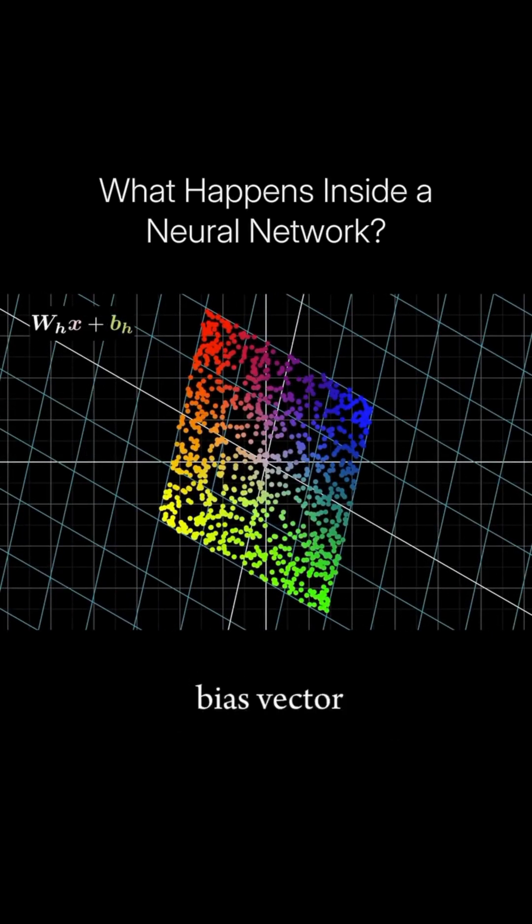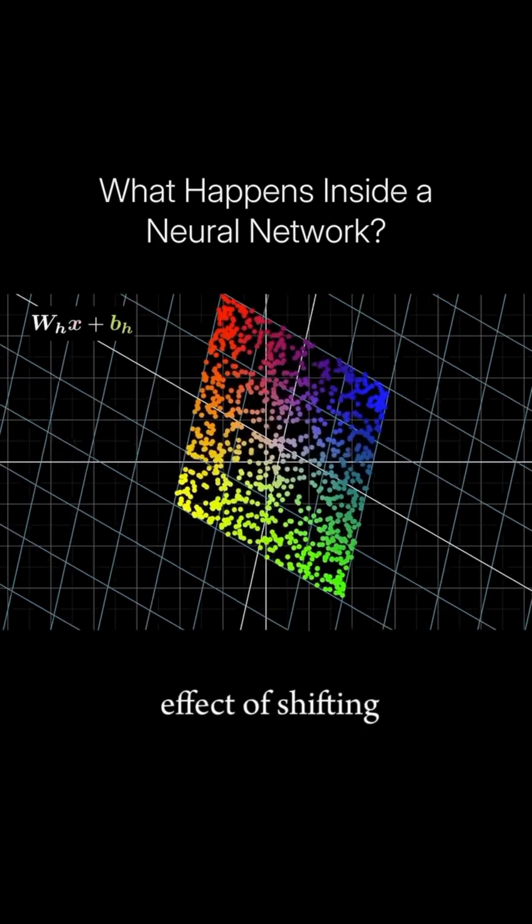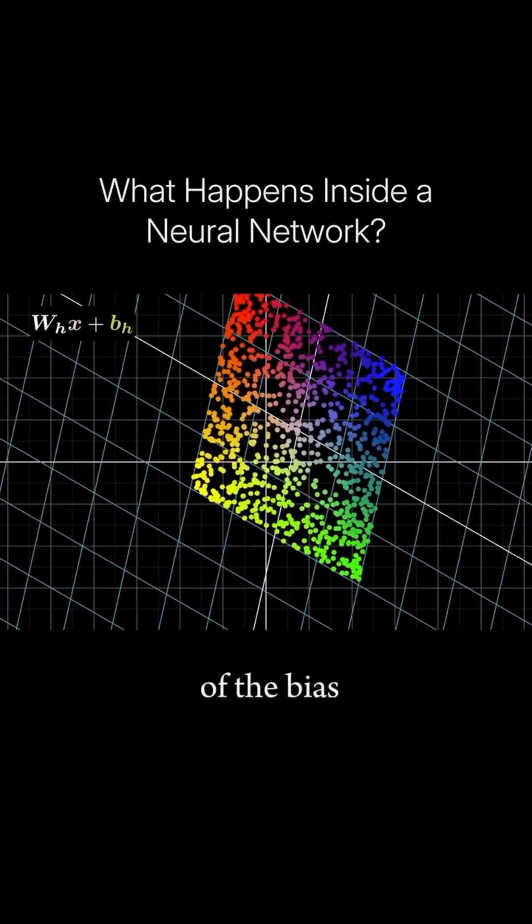The next step is adding the bias vector. This has the effect of shifting the points in the direction of the bias term.